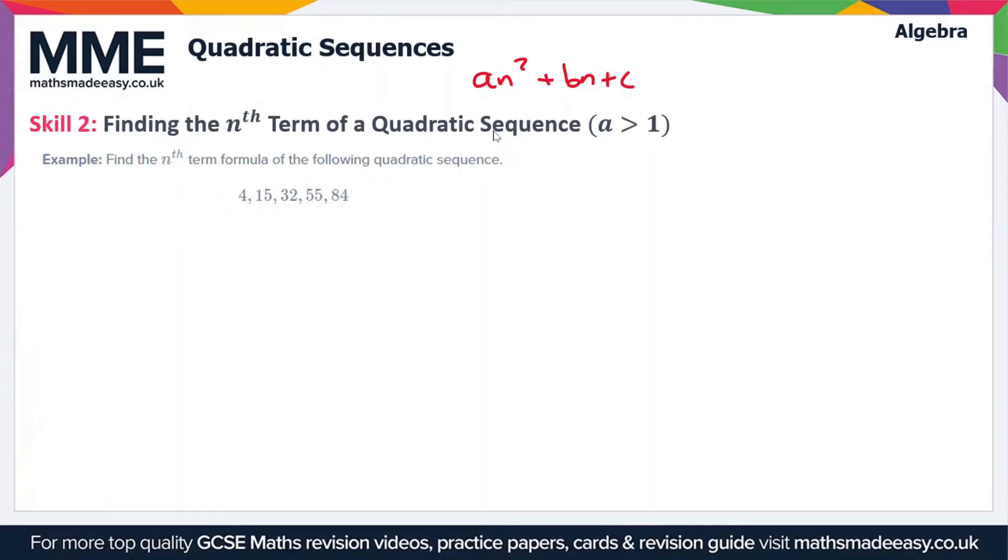Let's look at this example here. We have to find the nth term formula for the following quadratic sequence, and our sequence is 4, 15, 32, 55, and 84. So let's start by rewriting the sequence. We've got 4, 15, 32, 55, and 84.